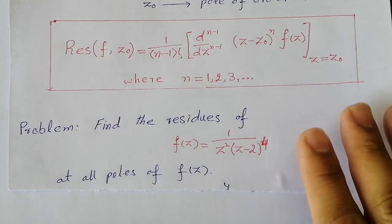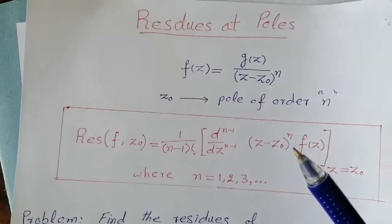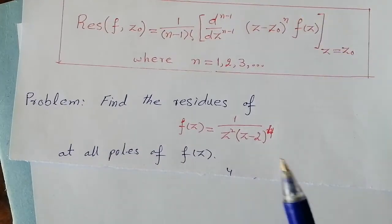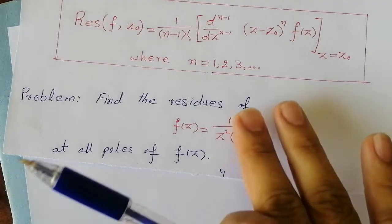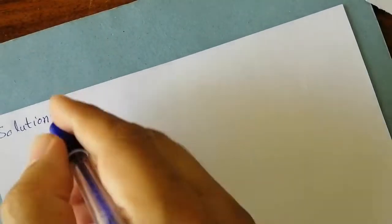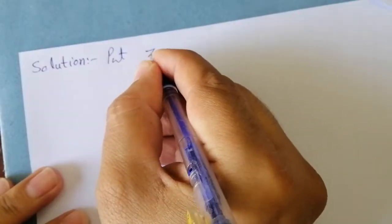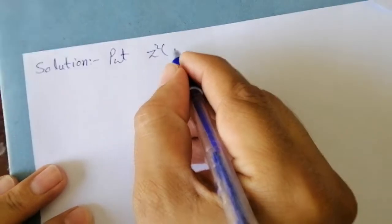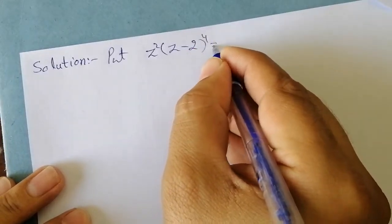Let us start from the solution. First of all, we have to obtain the poles. To obtain the poles, we always set the denominator equal to zero. So we put z² · (z − 2)⁴ = 0.